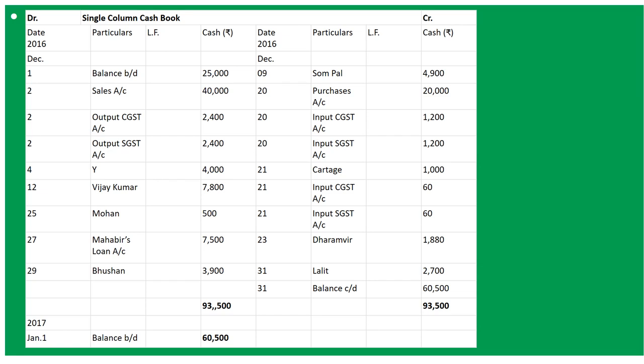December 20th: bought goods for cash. CGST and SGST is given at 6%. So 'By Purchases Account' 20,000, 'By Input CGST' 1,200 - that is 6% of 20,000 - and 'By Input SGST' 1,200, also 6% of 20,000.